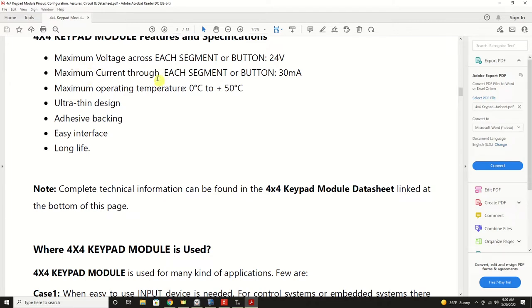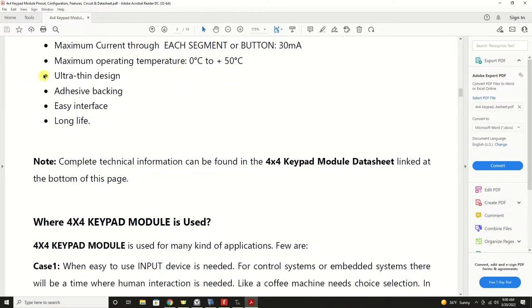Maximum voltage, maximum current, always important to look at in a data sheet. In this case it's looking at 24 volts max, 30 milliamps max, and in truth that's way way more than we should ever use on a keypad, especially on a Pico where we're working with 3.3 volts. So we're well within the operating capability of this particular unit. And then they provide some other attributes and details about features.